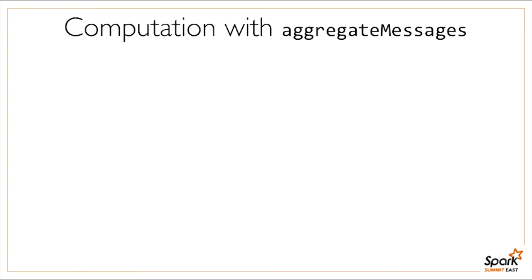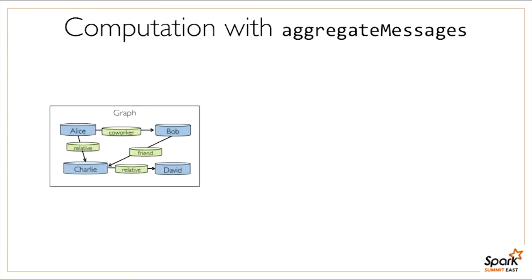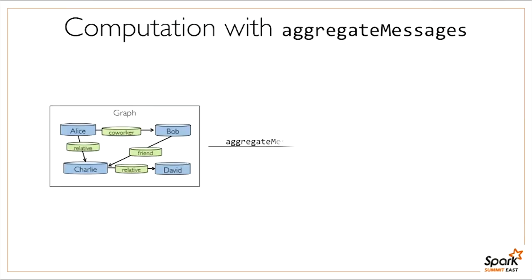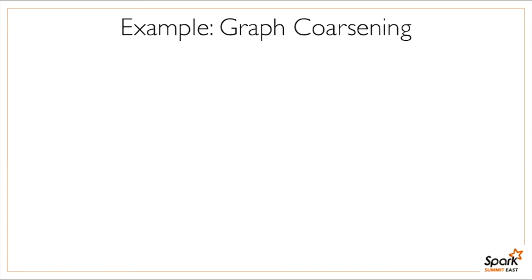Here's what it looks like to run. If we run it on that bigger graph, we get back a table saying, for example, Alice is involved in two relationships and Charlie is in three.